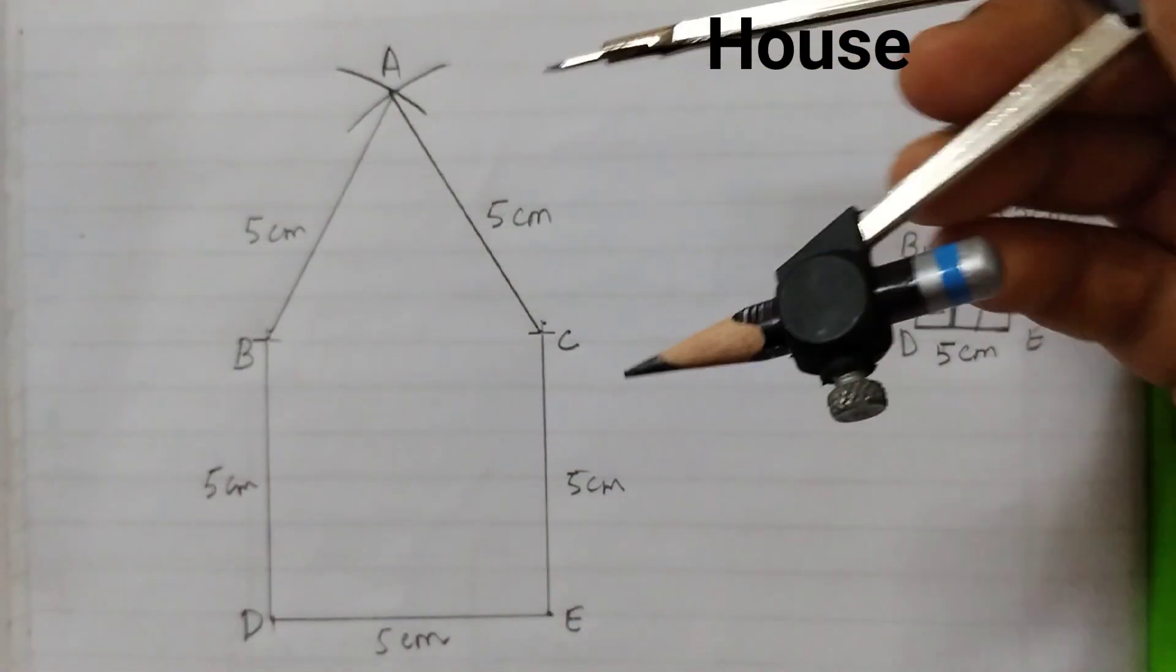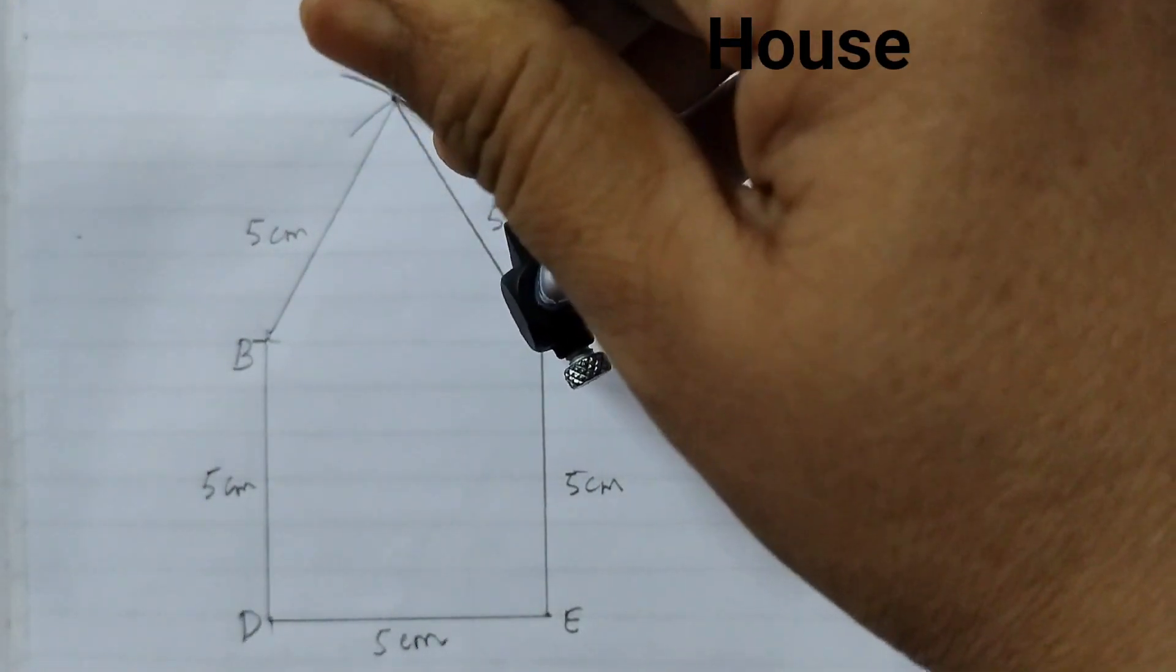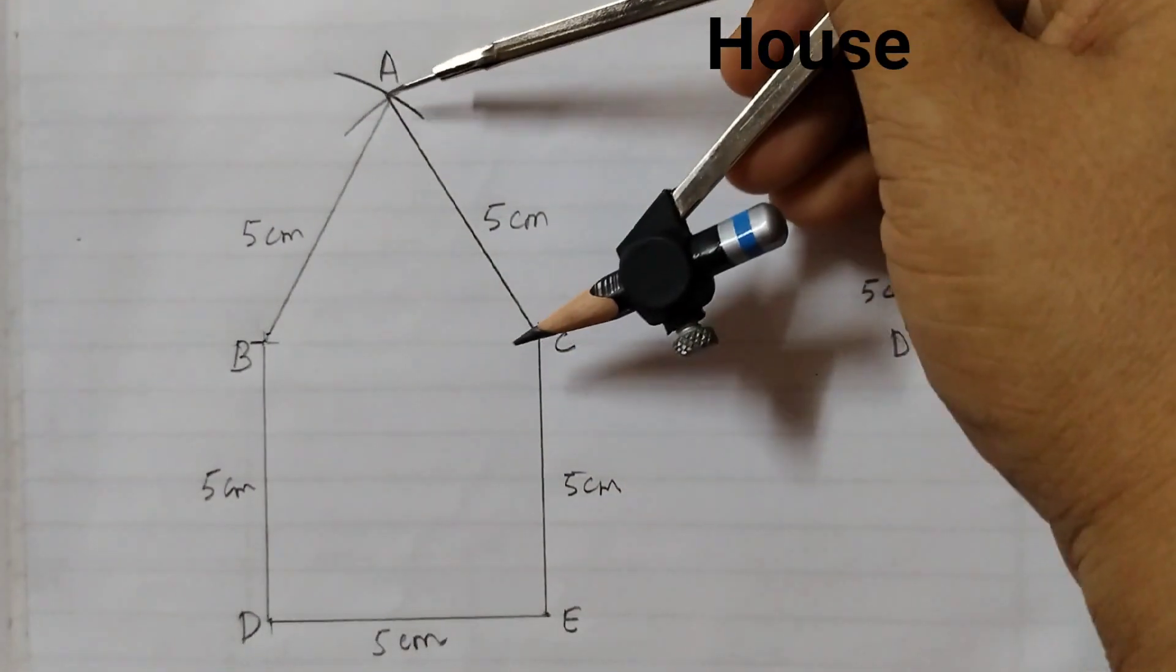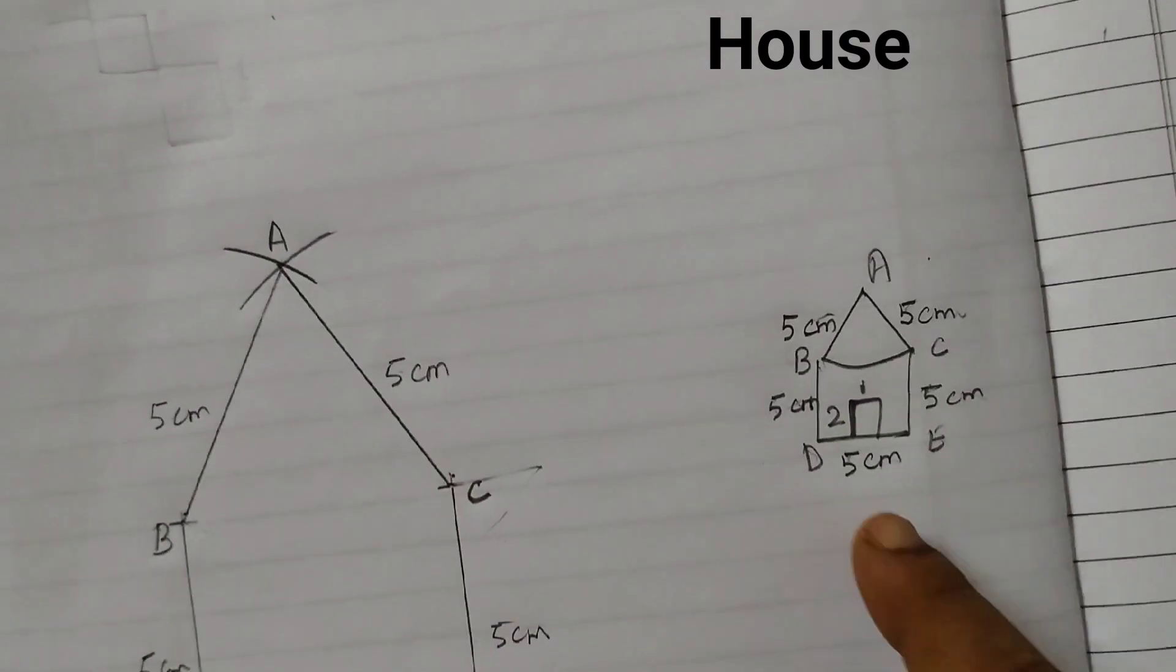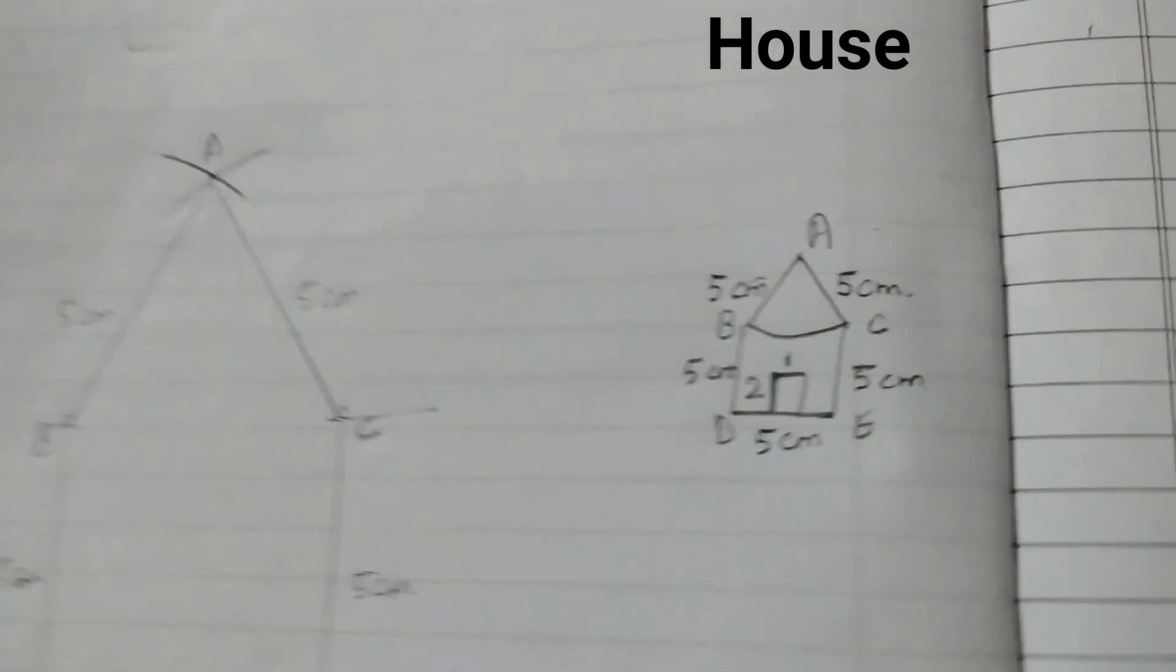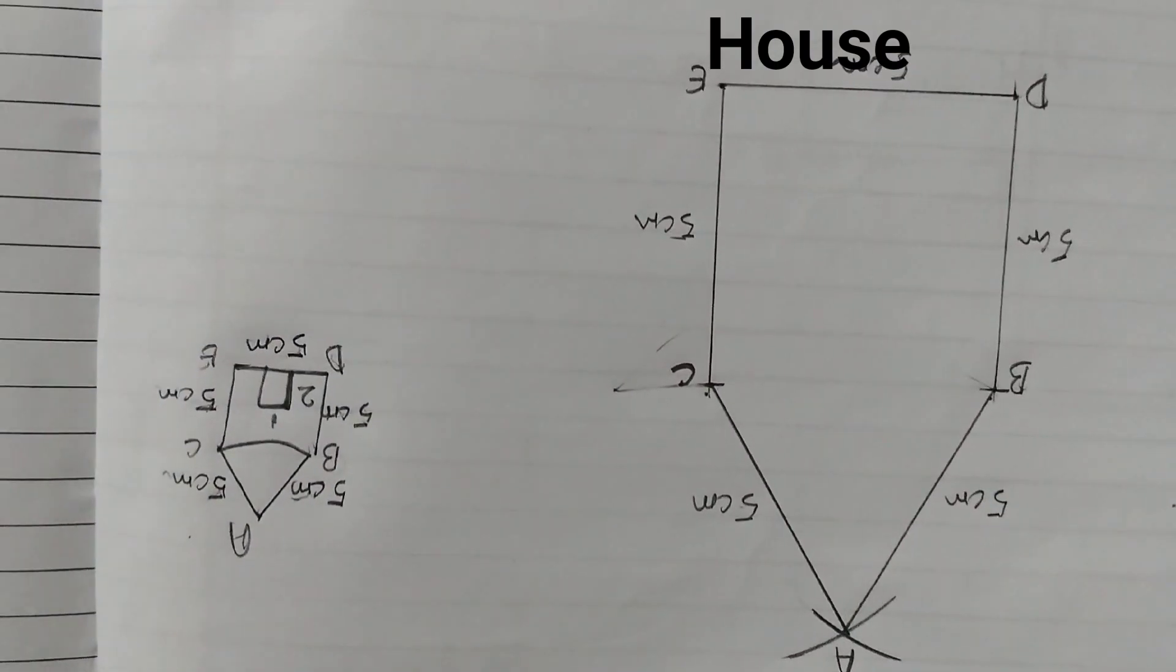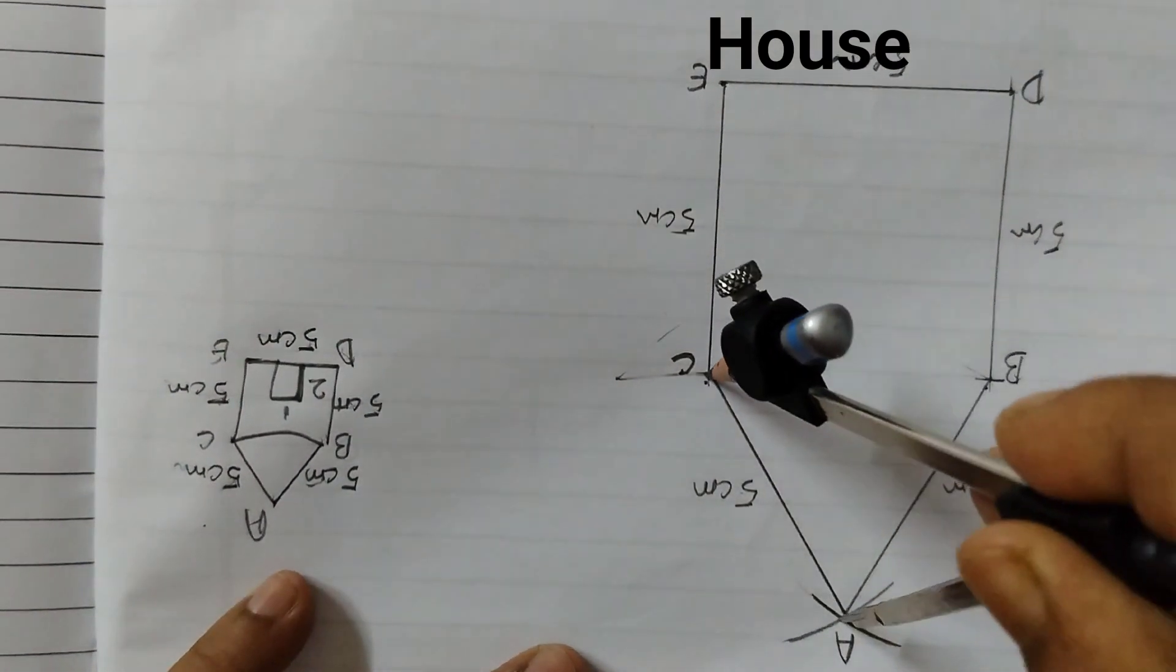Now from here you can draw an arc. From this point you draw an arc of 5 cm. With the same measurement we are going to place the point here and we are going to cut an arc. So for that I will just turn the paper like this and I will place my pointer here and cut an arc.